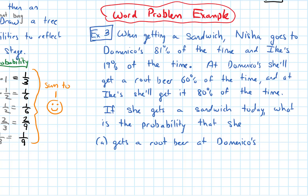In this video we are going to do a word problem example in this section on stochastic processes and using trees to evaluate probabilities. The example says: when getting a sandwich, Nisha goes to Domenico's 81% of the time and Ike's 19% of the time. At Domenico's she'll get a root beer 60% of the time and at Ike's she'll get it 80% of the time. If she gets a sandwich today, what is the probability that she — part A asks — gets a root beer at Domenico's?